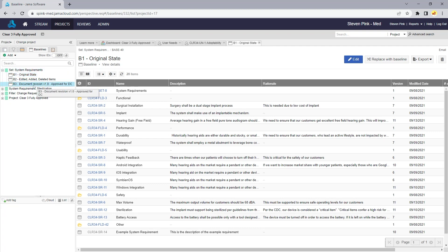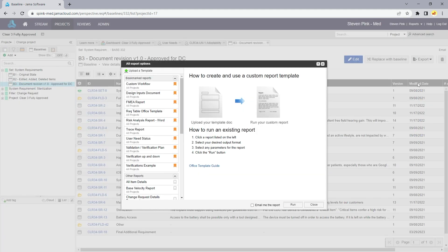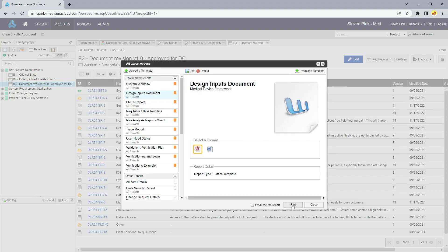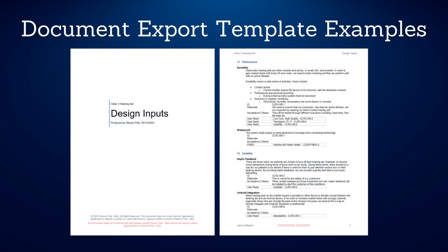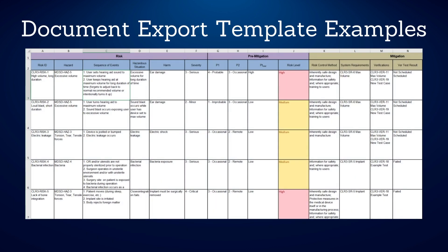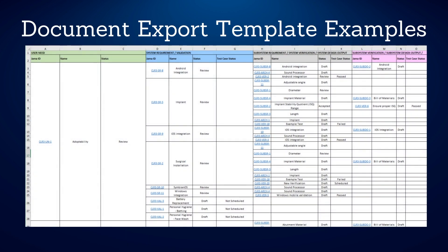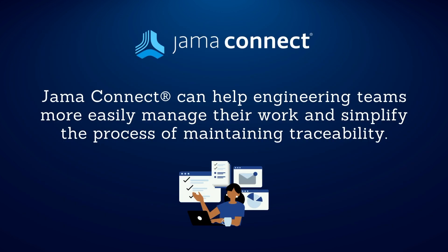When the time comes to generate auditable documentation, JAMA Connect allows teams to automatically or manually capture baselines and export these baseline documents out of the system to be signed off in a separate document control system as an auditable record. This process reduces the time spent manually reworking documents as part of the QMS process, and these document export templates can easily be customized to match existing internal quality standards and ensure consistency in the way requirements and other details are documented.